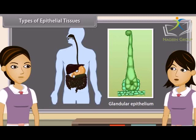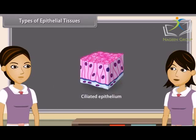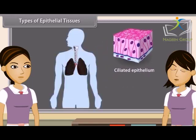Some cuboidal or columnar cells have a free border which bear thread-like cytoplasmic outgrowths known as cilia. These cells form the ciliated epithelium. It is found in sperm ducts, trachea, bronchi, kidney tubules and oviducts.